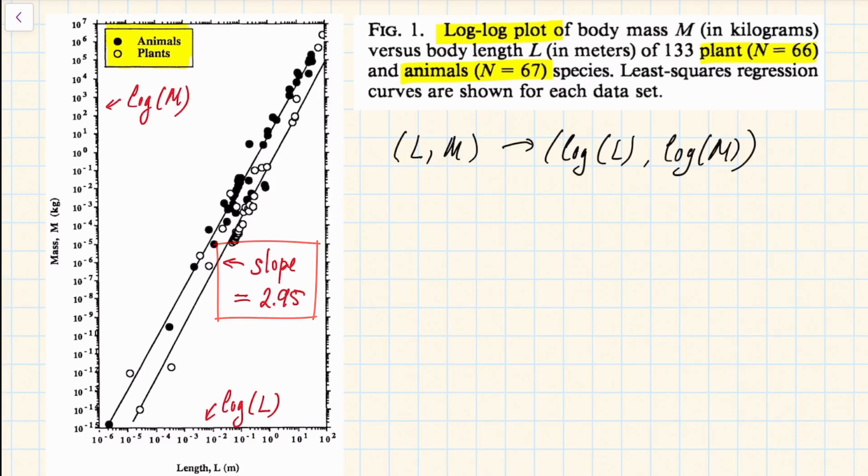And so what this means is that the logarithm of the mass is approximately equal to some constant plus 2.95 times the logarithm of the length. And so if this was exactly on the line then we would have exact equality.